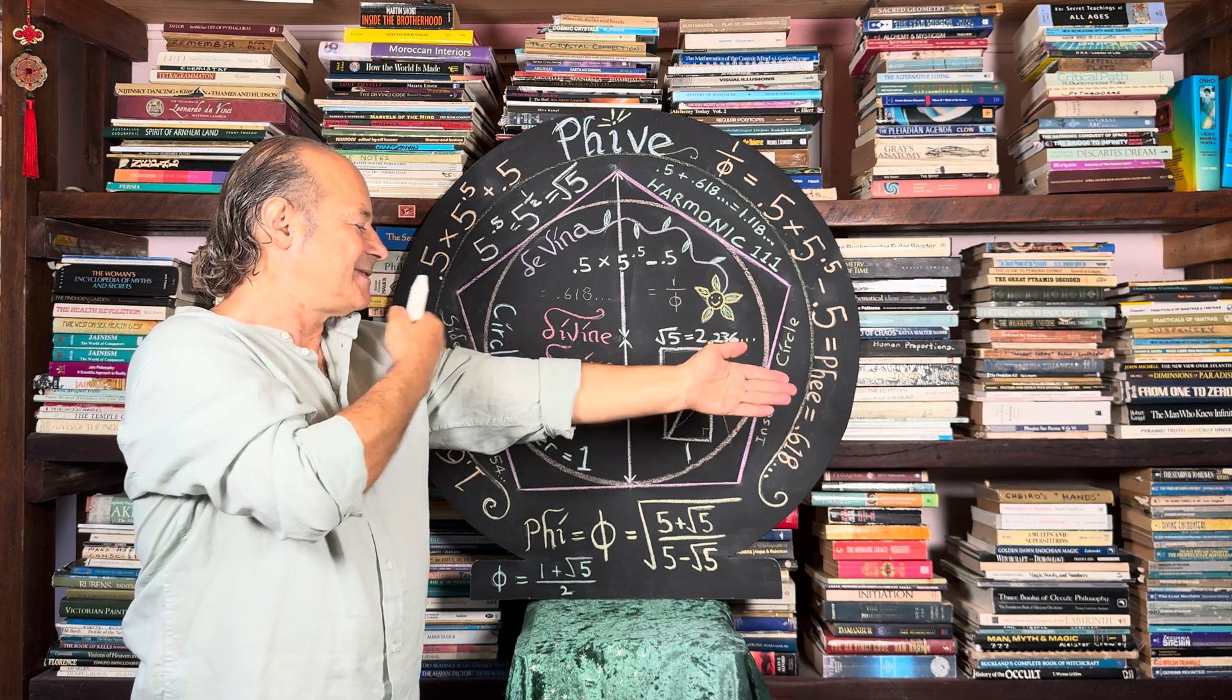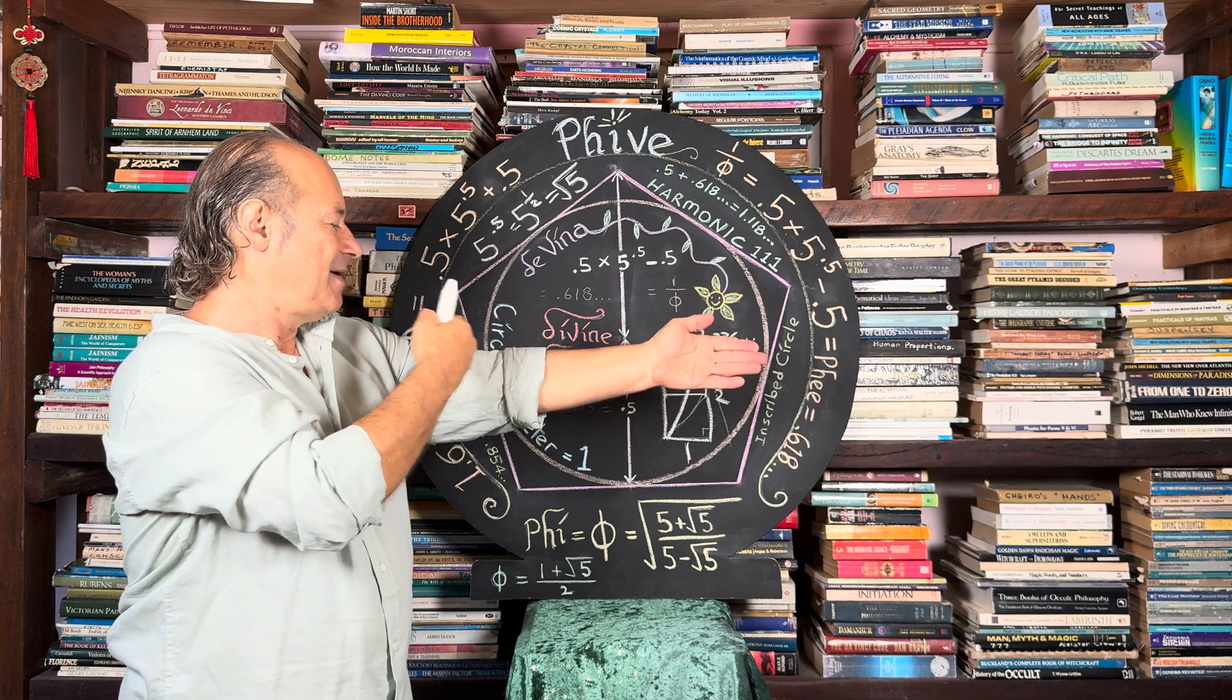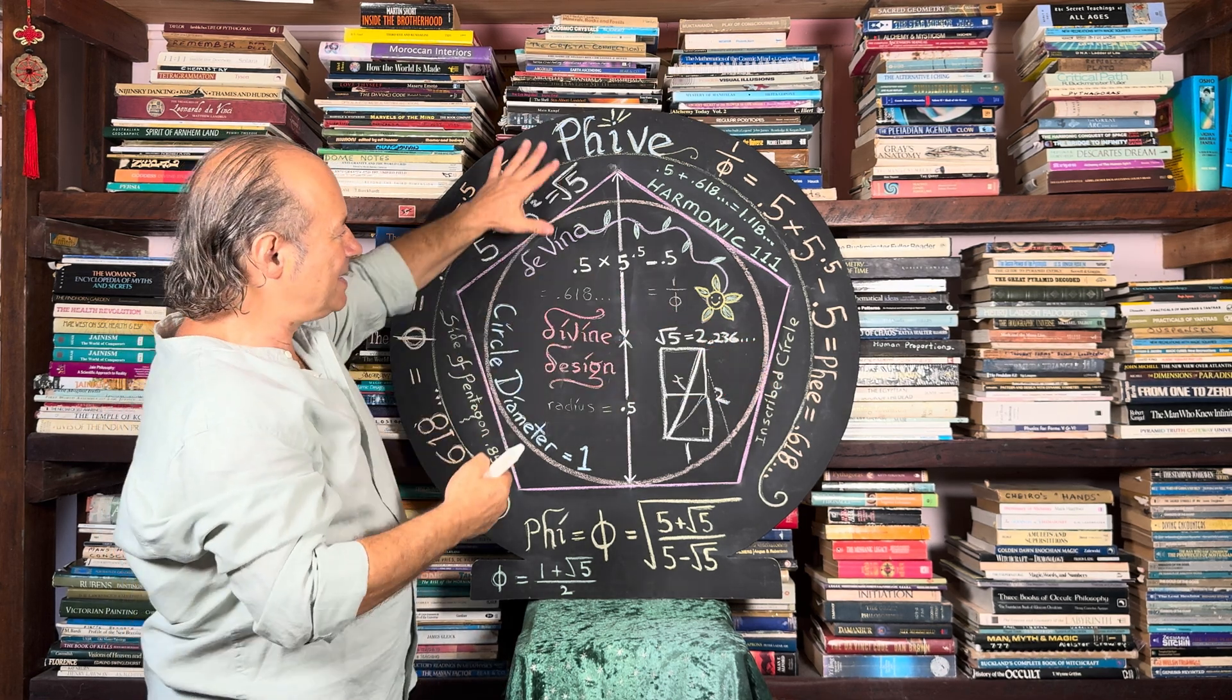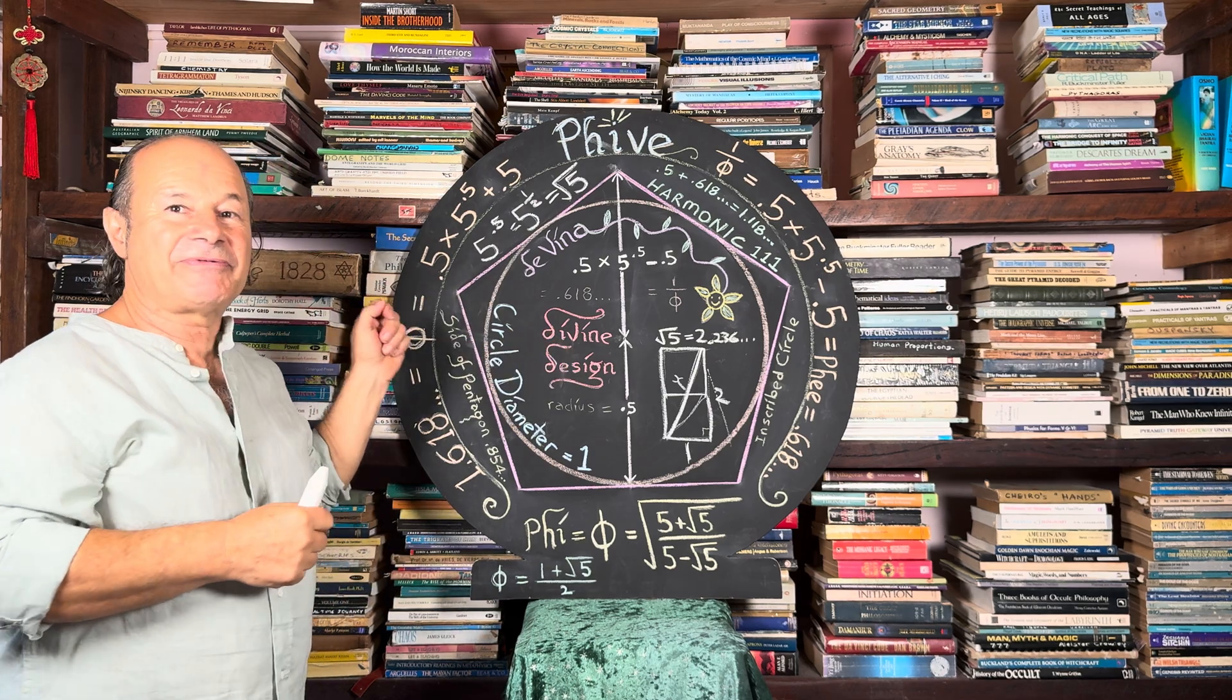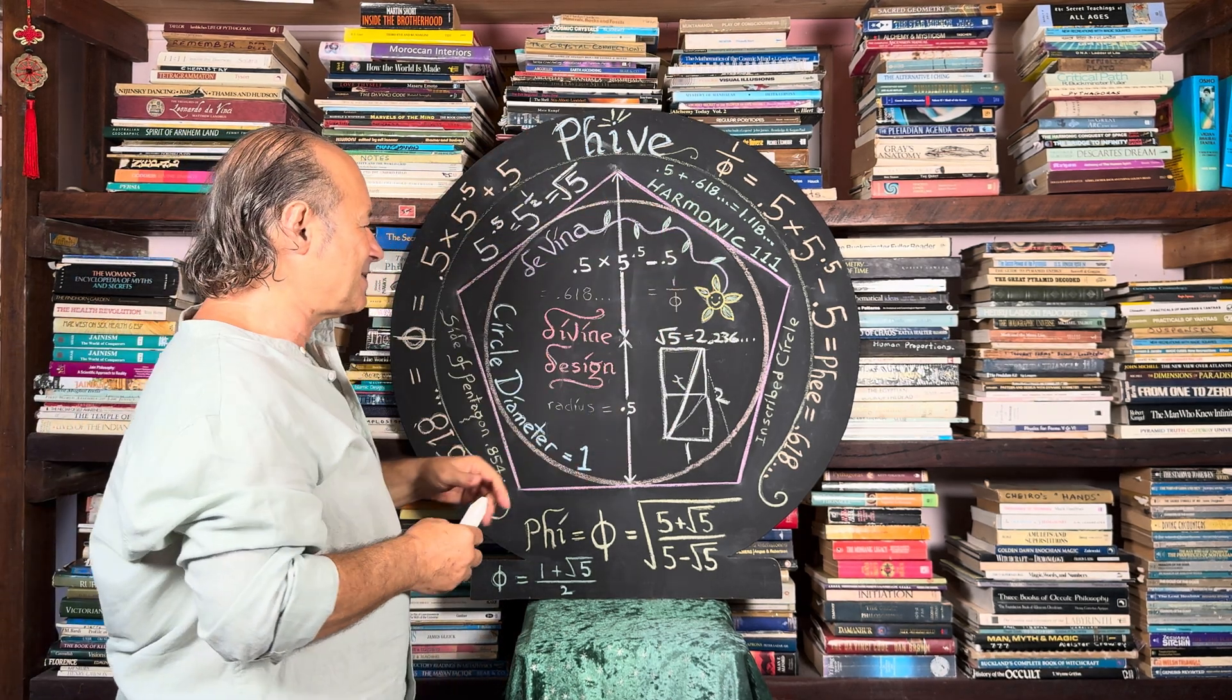So if this distance is 8, this distance is 13, that's the Fibonacci sequence. Or if this is 1, this is 1.618. So this is really a reflection of every part of the human canon, and also the distances of the planets from the sun.